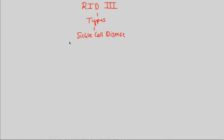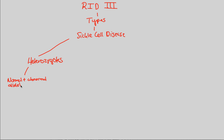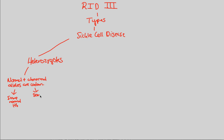The big idea behind sickle cell disease that's always looked at is the heterozygotes of sickle cell disease. They have a very interesting scenario. If we have the idea of heterozygotes in sickle cell disease, we have to understand that heterozygotes actually display something known as codominance, meaning that the normal plus the abnormal alleles — the dominant plus the recessive alleles — are what we consider codominant. That means anybody who's a heterozygote will actually express both normal and abnormal red blood cells. They will have some normal hemoglobin but also some abnormal hemoglobin.